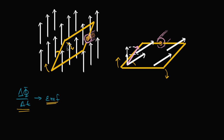If we have an increase in flux as we rotate up, at least until we get to the flat point, we're going to induce a current. We need to think about the orientation of that current. We want a current that will induce a magnetic field acting against the change in flux. Since the flux is increasing in the upward direction, we need a magnetic field acting against that. Using the right-hand rule, my thumb points in the direction of the induced current.